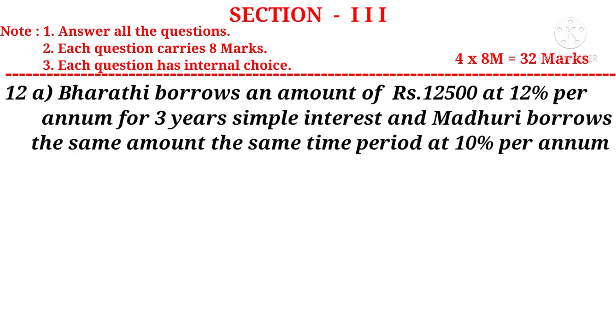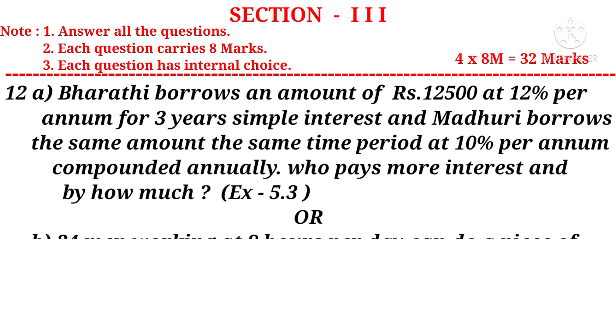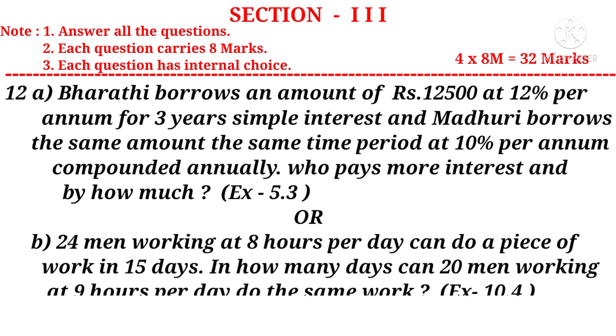Question 12(a): Bharati borrows an amount of 12,500 at 12% per annum for 3 years simple interest, and Madhuri borrows the same amount, the same time period at 10% per annum compounded annually. Who pays more interest and by how much? It is a question from the 5th chapter. Or (b), 24 men working at 8 hours per day can do a piece of work in 15 days. In how many days can 20 men working at 9 hours per day do the same work? It is a question from the 10th chapter.